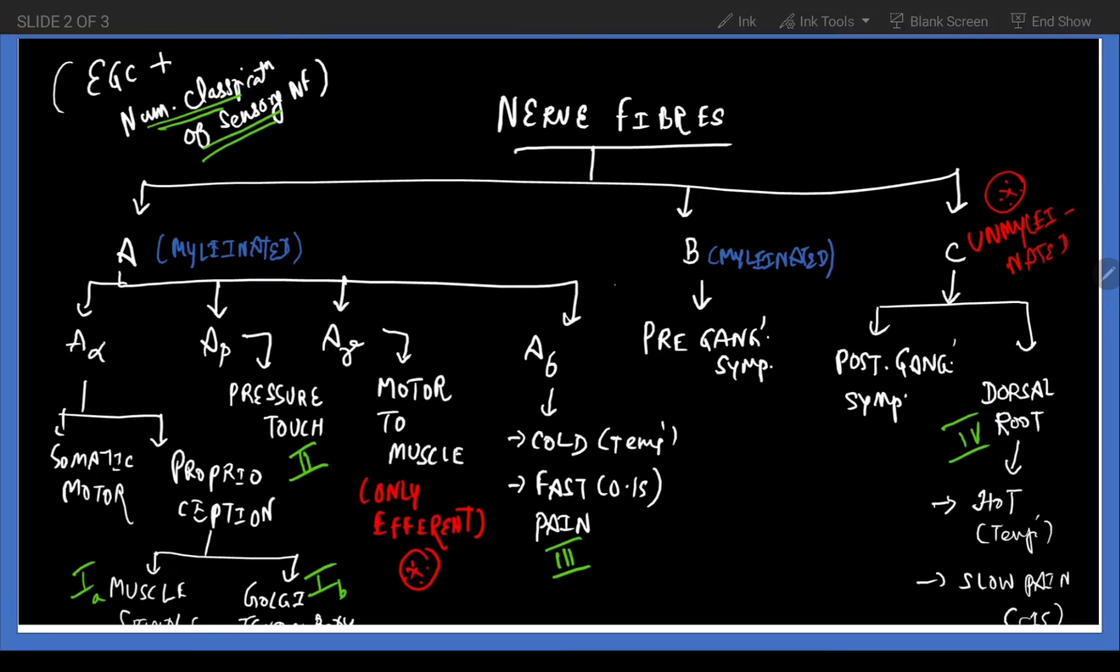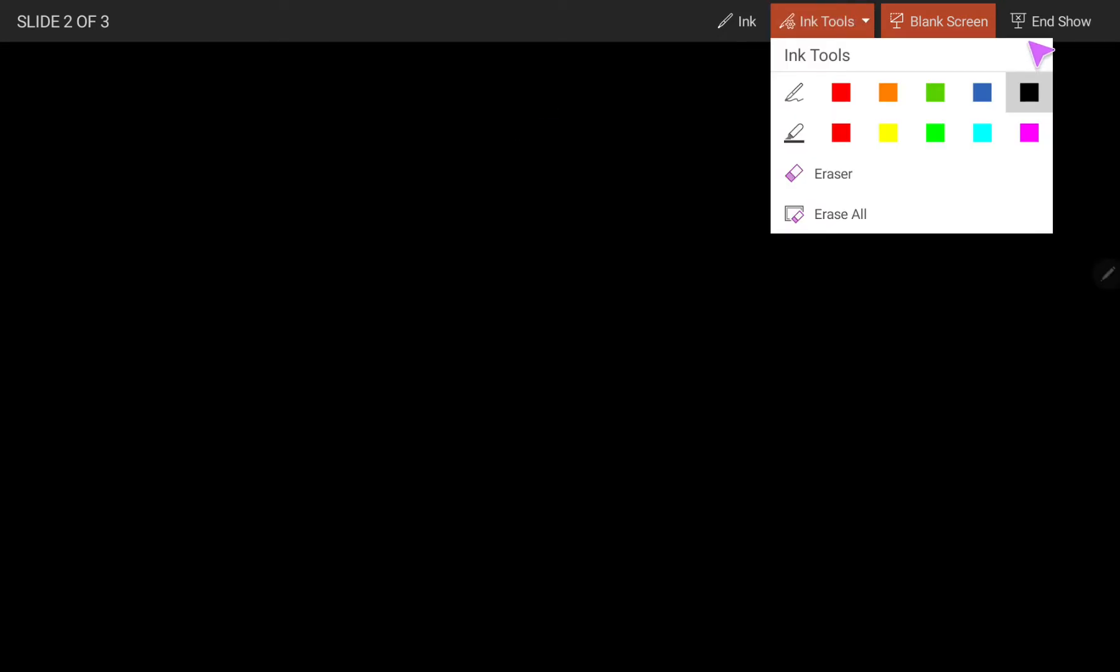Let's now see the A fibers. First, we have A-alpha. This alpha is similar to the letter S that we write, so let's take 'somatic' as a trick to remember. A-alpha is somatic motor plus proprioception.